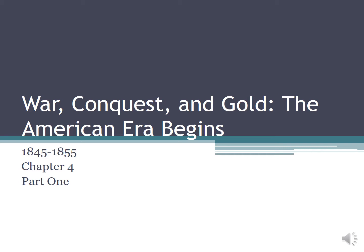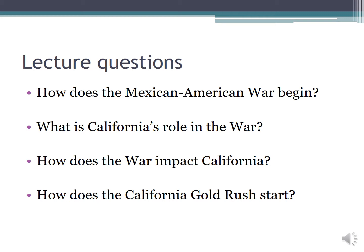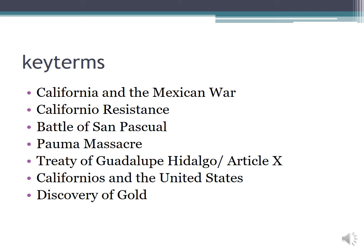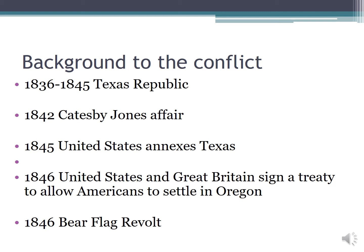Hey students, welcome. Today we are going to get into chapter four of your text — we are talking about war and gold and the beginning of the American era. This is part one of a two-part lecture. Our lecture questions for this part of chapter four: How does the Mexican-American War begin? What is California's role in the Mexican-American War? How does the war impact California? And finally, how does the California Gold Rush start? Here are our key terms for this lecture.